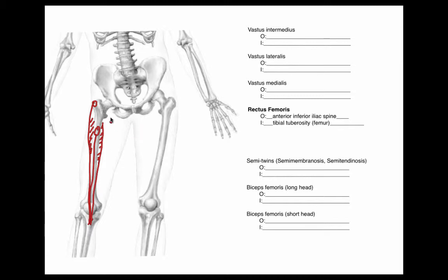The last of the quad muscles is rectus femoris, and this one is going to originate on the anterior inferior iliac spine — this bump right here. On the last video we looked at sartorius, which originates on the anterior superior iliac spine, and now we're looking at the anterior inferior iliac spine. Of course, this muscle will also insert on the tibial tuberosity.